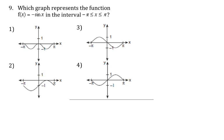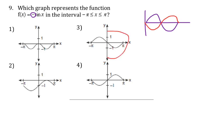Number 9: when you have a negative sign in front of sine, instead of the graph going up first it becomes negative first. Normally the graph would go up after the y-axis, but now it goes down. So the correct choice is the one that starts going down right after the y-axis.